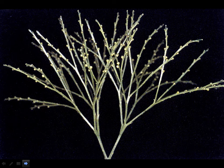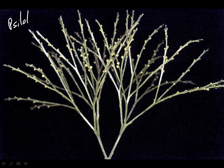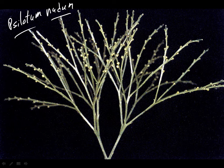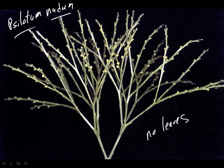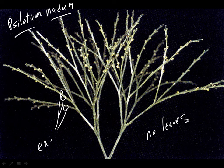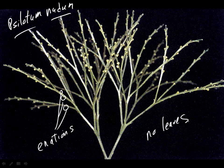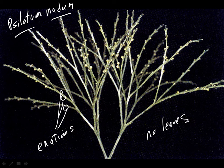Here is Psilotum, and you can see where the naked name comes from — there are no leaves. There are little tiny outgrowths from the stem. These are not leaves; they are called enations. They're little non-vascularized blips of tissue — not microphylls, not megaphylls, not leaves. Enations are something different, unique to this plant, just little outgrowths of tissue.